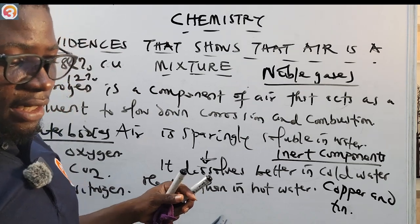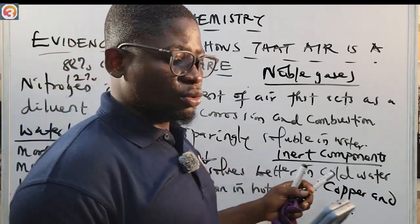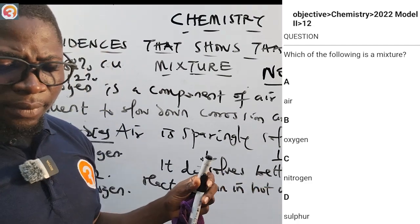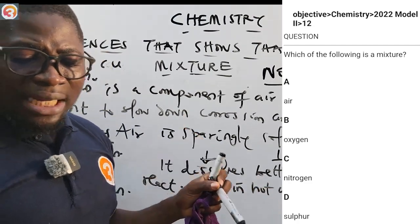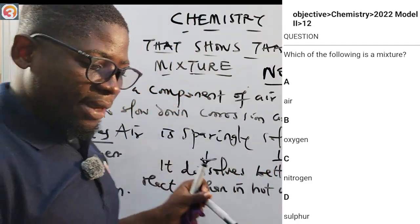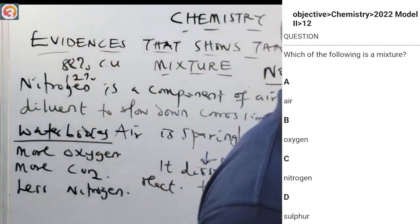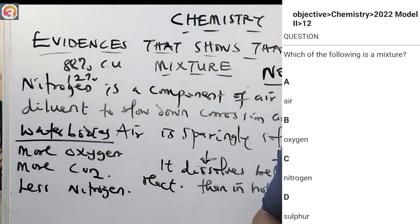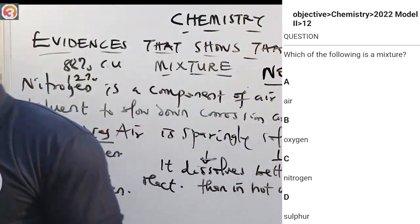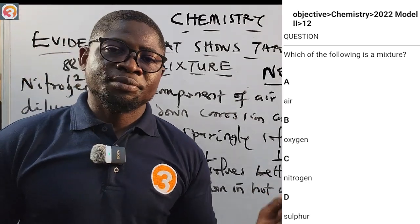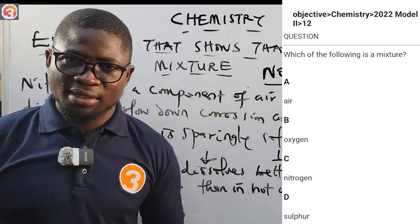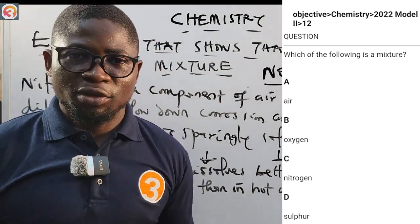Now let's see another question: 2022 number 12. Which of the following is a mixture? A: air, B: oxygen, C: nitrogen, D: sulfur. The correct answer is air. Air is a mixture. That's all for today — in the next episode I'll be looking at flames. Thank you for watching.